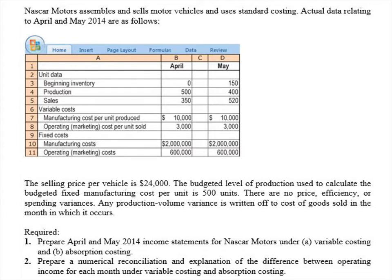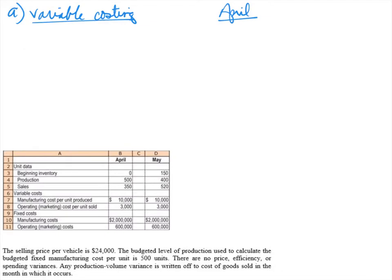Let's start with variable costing for April. We'll set up a contribution margin income statement. Starting with revenues: the selling price per vehicle is $24,000. We sold 350 units, which gives us revenues of $8,400,000 for April. From revenues we'll subtract all variable costs to get contribution margin, starting with cost of goods sold.